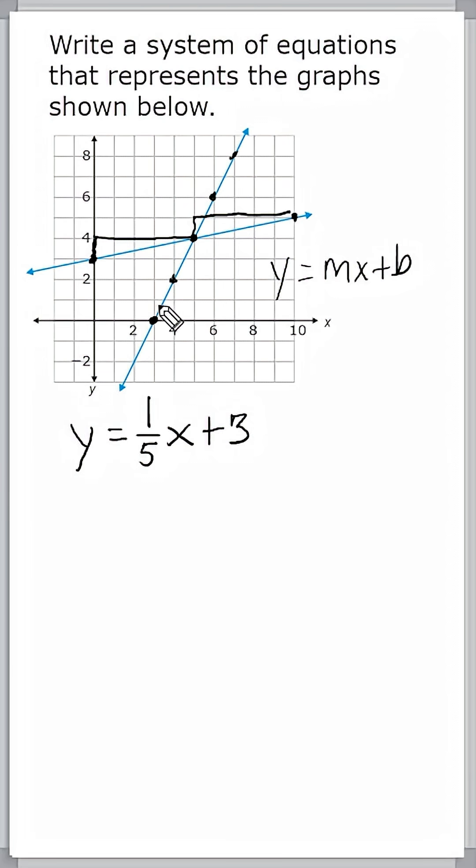All right, we can see that between each one of our points, we have a rise of 2. So that's positive 2, and a run of 1. So we go up 2 over 1, up 2 over 1. And 2 over 1 can be simplified to just positive 2.